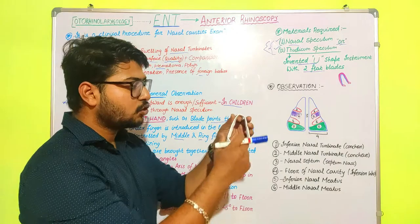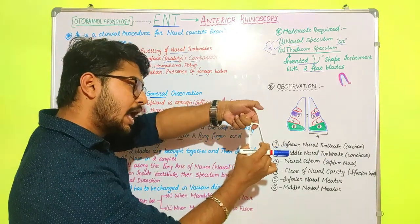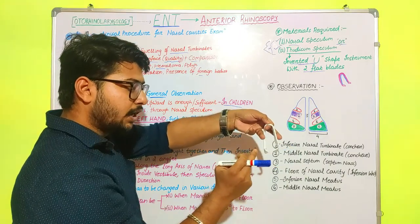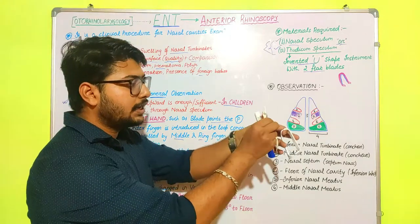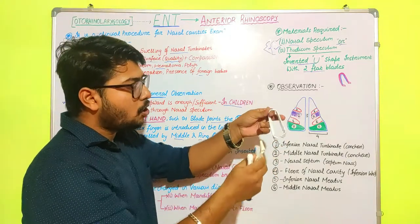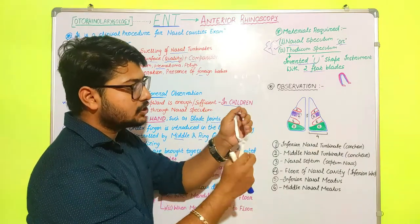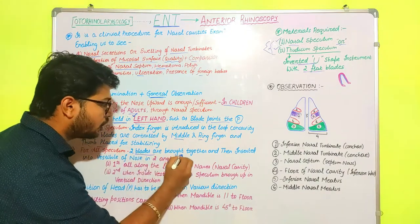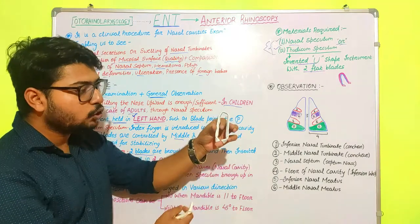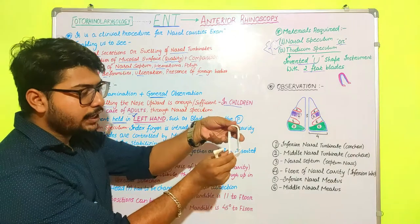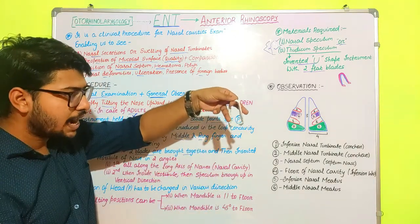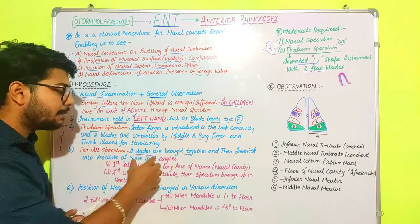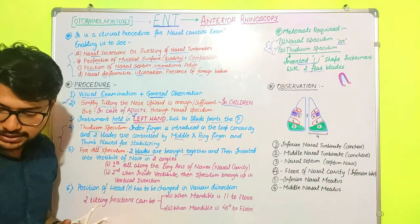Holding the thudicum speculum: the index finger goes through the loop, the thumb is used for stabilization, and the two flat blades are controlled by the middle and ring fingers. For the nasal speculum, the instrument must be inserted with the two flat blades in a closed manner — brought together before insertion — and then opened once inside the vestibule of the nose.